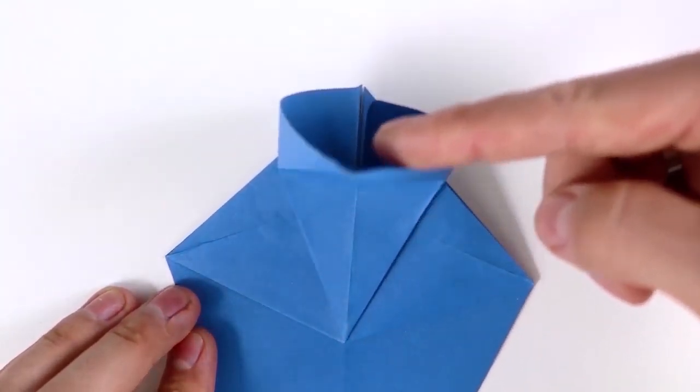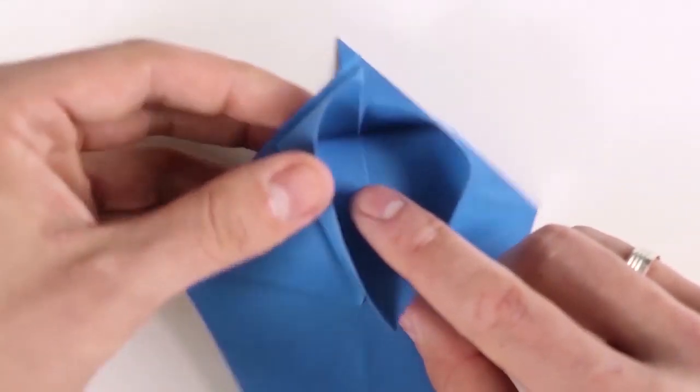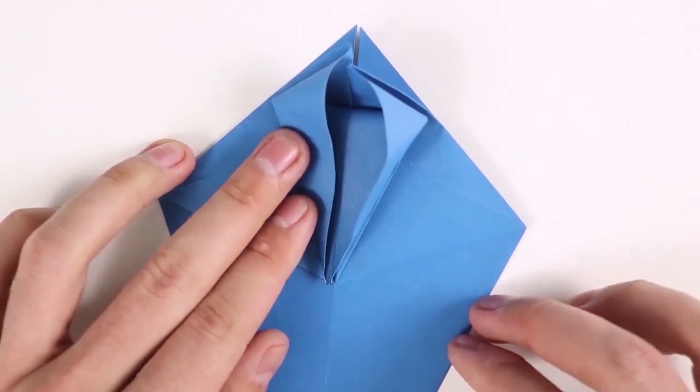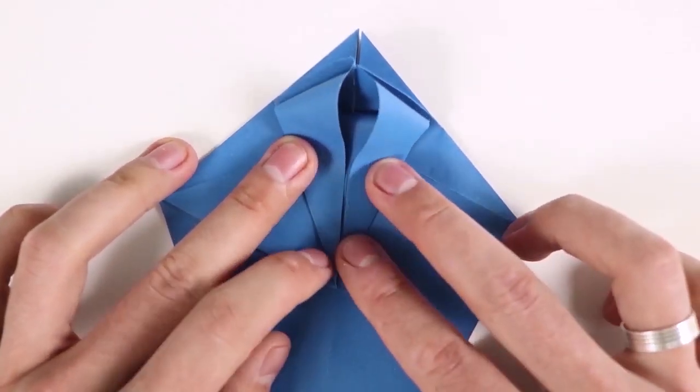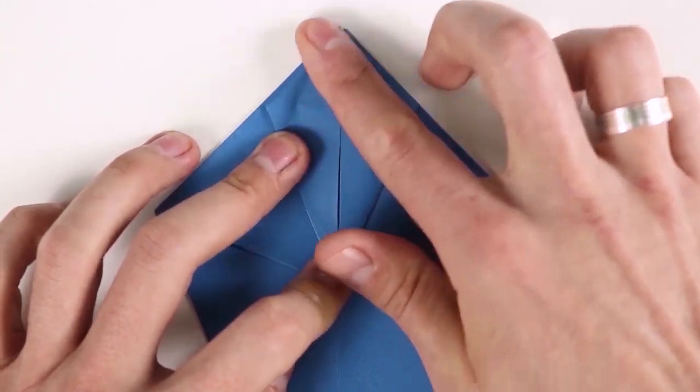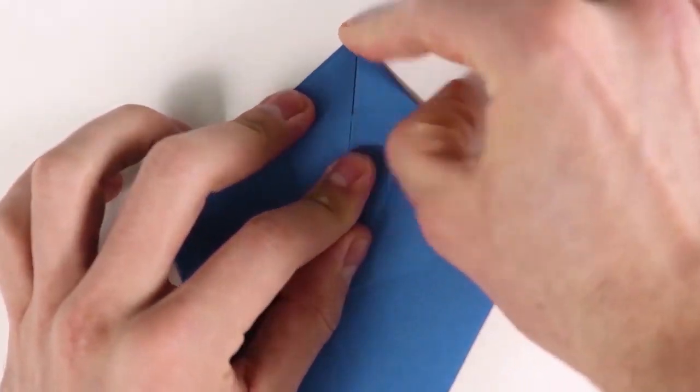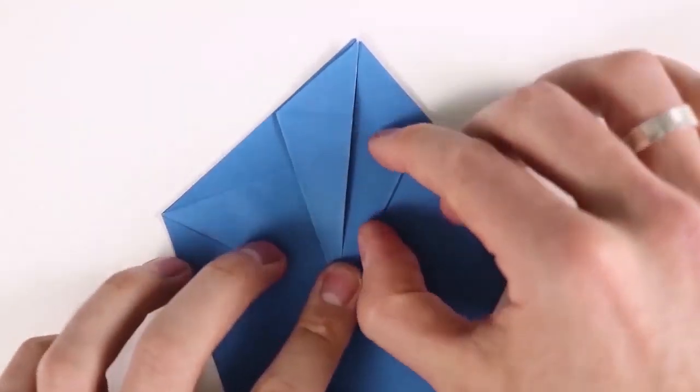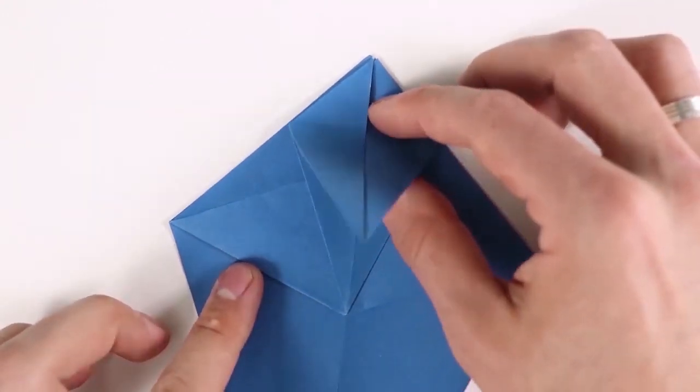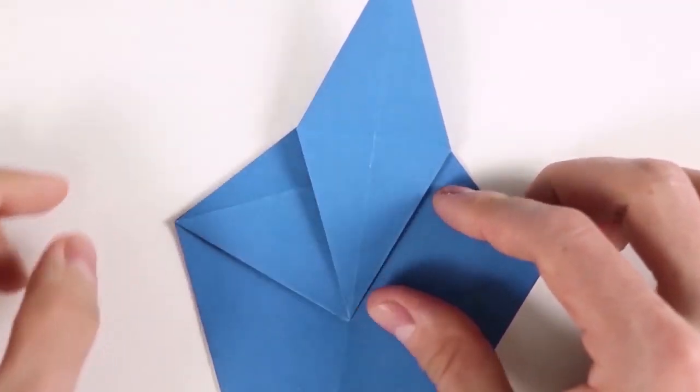Now bring the top corner down. Flatten again, all the way to the top. And bring the flap up again. Now, here we have something like a diamond.